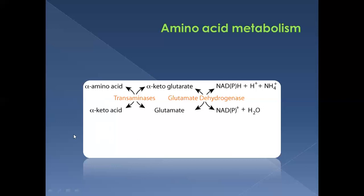This entire reaction briefs the processes involved in amino acid metabolism. Here you have an amino acid and an enzyme referred to as transaminases. The amino acid can transfer its amino group to any compound — for example, an alpha-ketoglutarate compound — which then gets converted into glutamate. This conversion is catalyzed by transaminases.